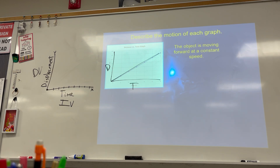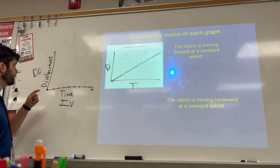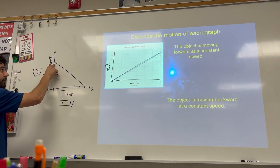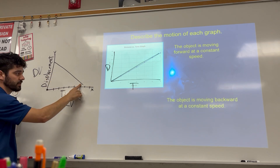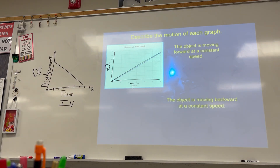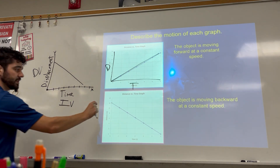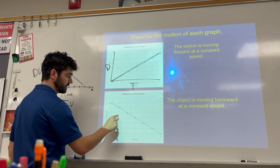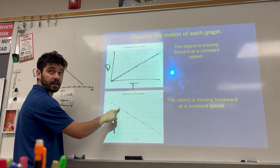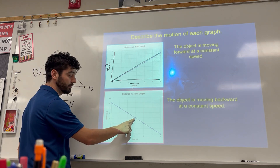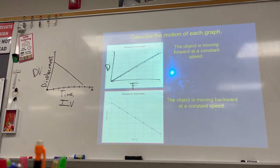What if I was going constant speed but going backwards? I would be going down. If I'm going backwards, that means I'm coming back to where I started. I started far away and I'm coming back to the starting line, so it would go down. But it's still a straight line because I'm covering the same amount of distance every second — I went backwards two meters in a second, then two more meters, then two more. Constant speed, just a different direction.